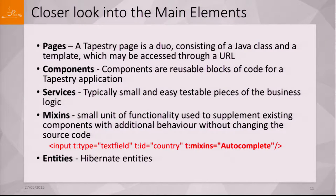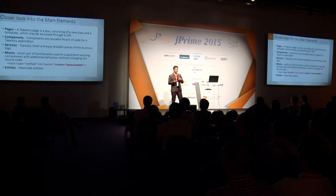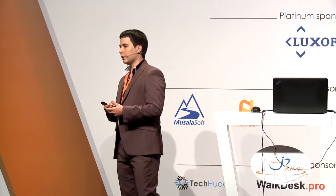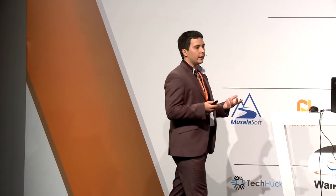Let's look more closely at the specific components Tapestry has. A page is a combination between a Java class and a template file. The only rule is that they should have the same name and be placed in the same hierarchy of packages and folders. So you have back-end and front-end really well coupled. Components are pretty much the same but smaller in size — they can also have a template and Java class named with the same name, but here the template is not required.